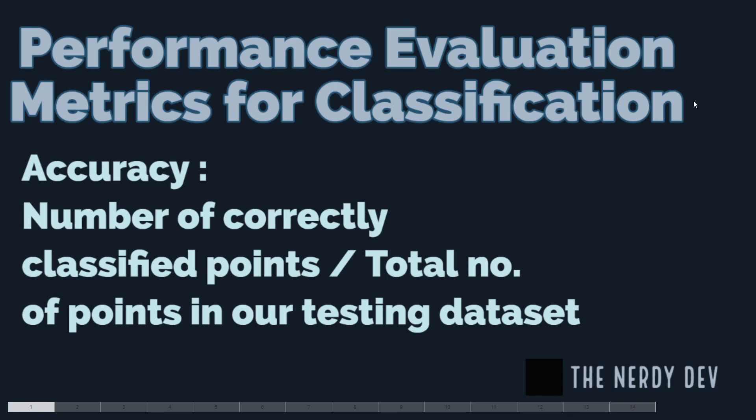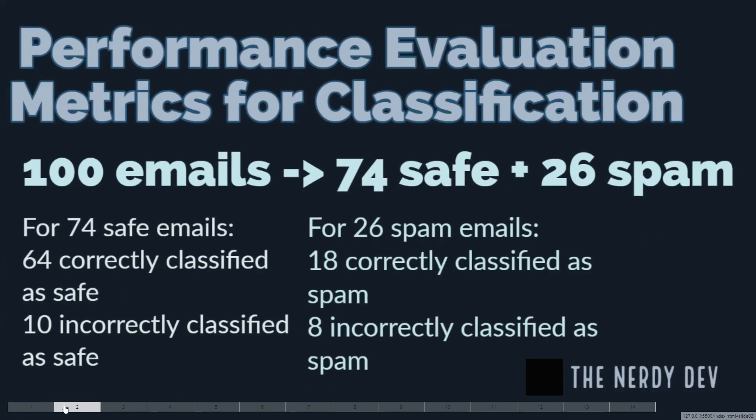To understand accuracy, let us consider a simple example of classifying emails into spam and safe. Suppose you are given 100 emails: 74 are safe emails and 26 are spam. A classifier model trained on this data correctly classified 64 out of 74 safe emails as safe, and the rest as spam.